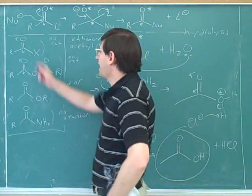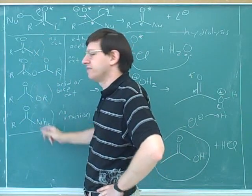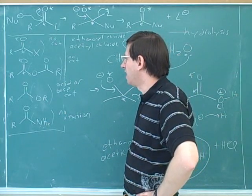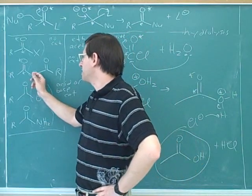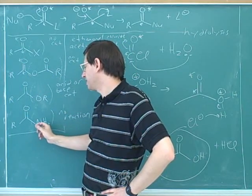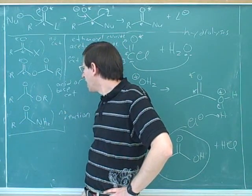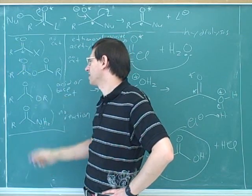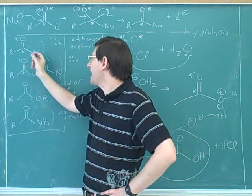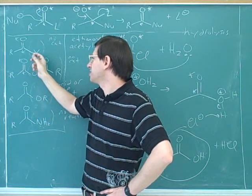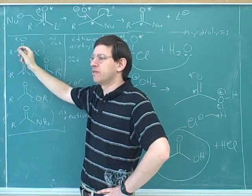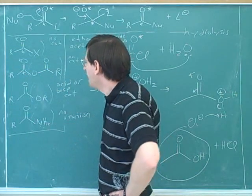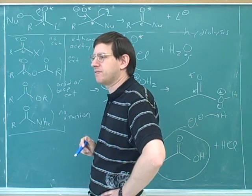We should review why the order of reactivity is like this — why acyl halides are the most reactive and amides are the least reactive. In the videos, I gave two different sets of explanations. One is based on resonance: some groups can donate electrons to the carbonyl to help stabilize it. Nitrogen can donate electrons by resonance to stabilize the carbonyl. Oxygen is less willing to donate because it's more electronegative, and halogens are the least willing to donate by resonance because chlorine and bromine are too big to form a good resonance overlap.